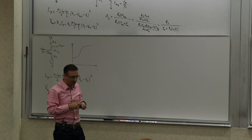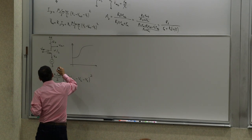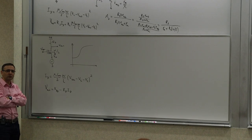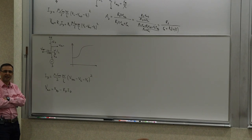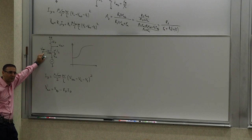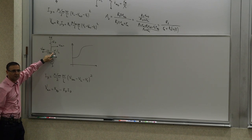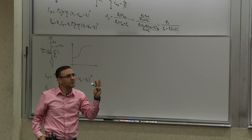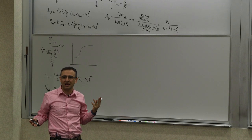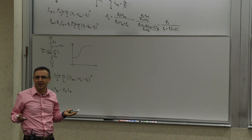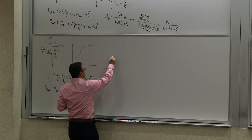From a small signal perspective, consider the body effect. The gate is at AC ground because it has a fixed bias, and so is the bulk. So you have two transistors whose gate, bulk, and drain terminals are all in parallel from an AC perspective. When all three terminals of two transistors are in parallel, they work together in aggregate — they're going to help each other and do the same thing. Let's see what body effect does in this case by looking at the small signal model.